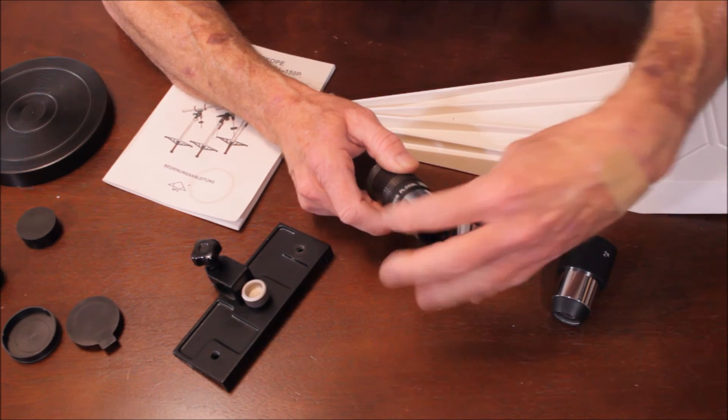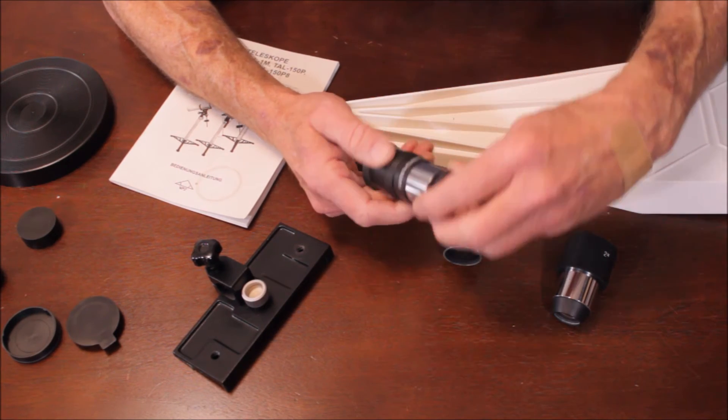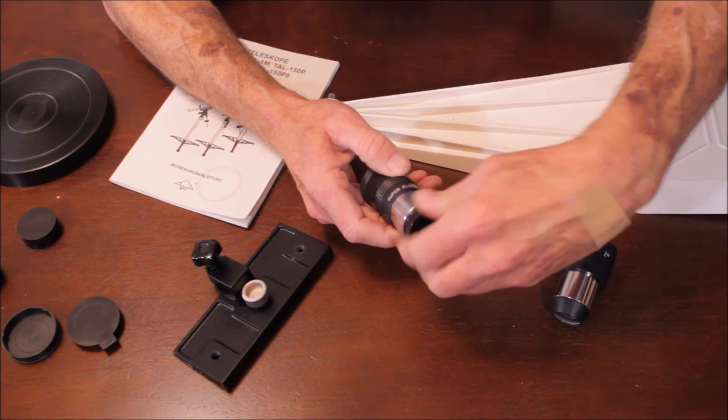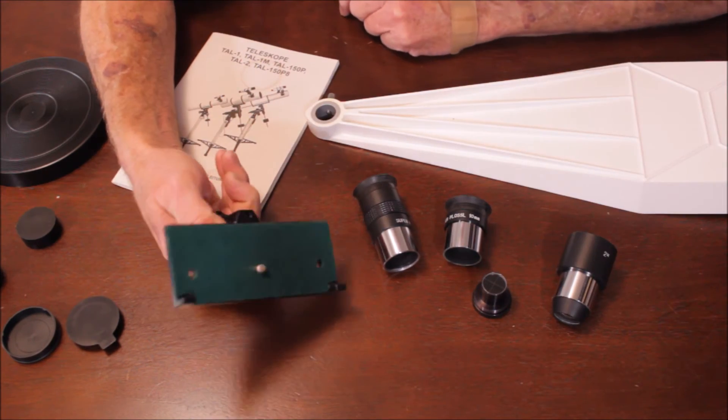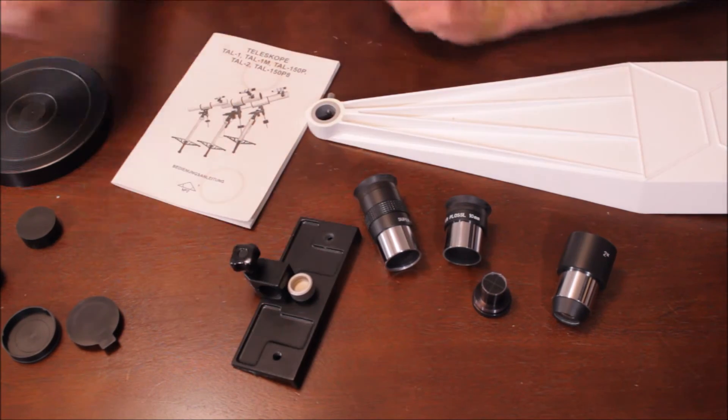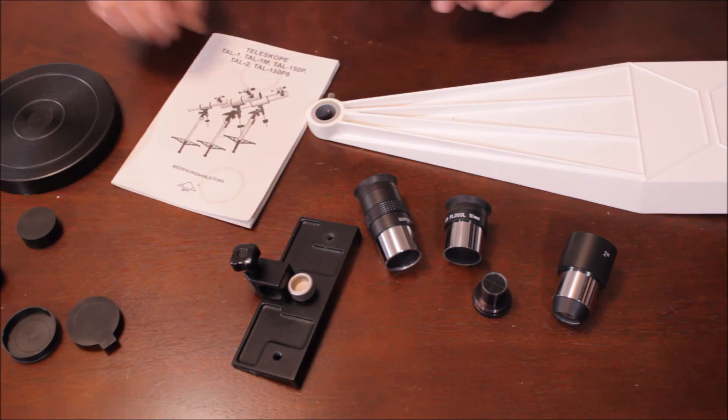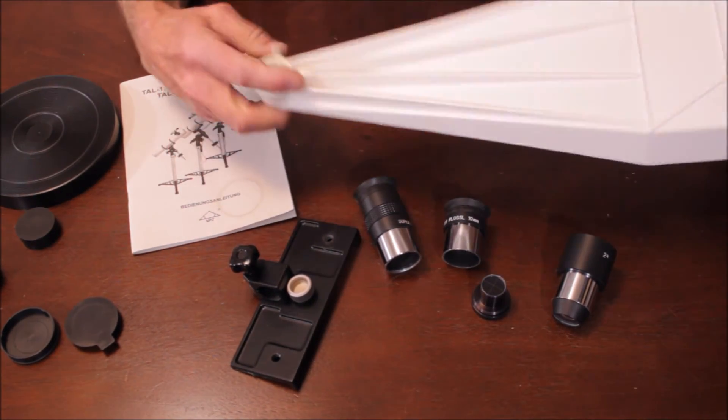Here's something very unusual - this is a reticle that slips right in and screws into the 25 millimeter, so you've got now a guiding eyepiece for guiding presumably a piggyback photograph. This is the piggyback mount so you can mount a camera. It's got an instructional manual, various covers and caps, and of course the solar projection device.